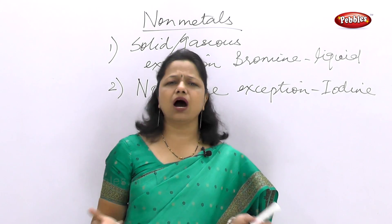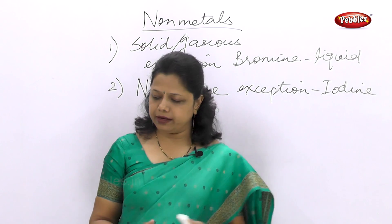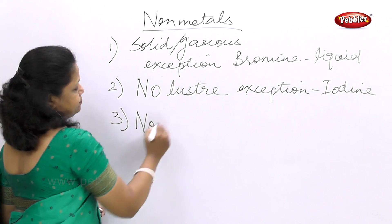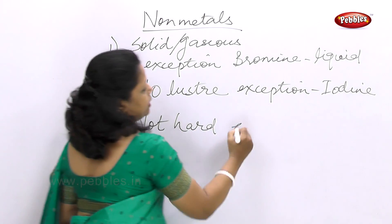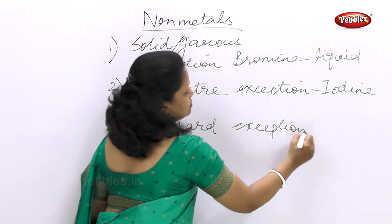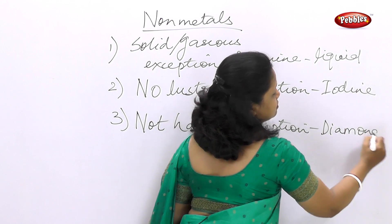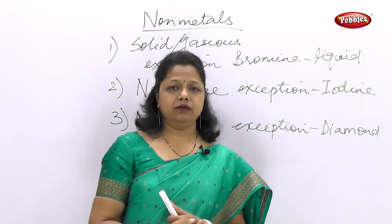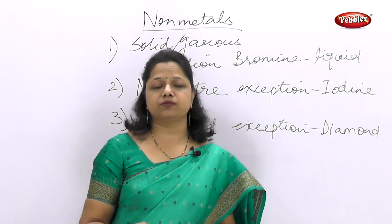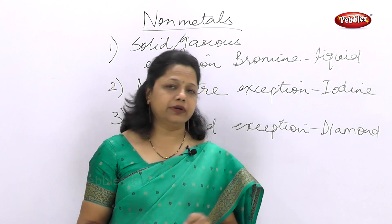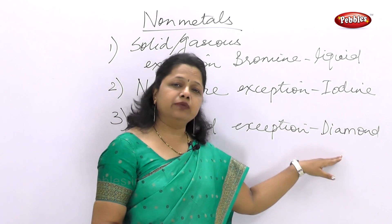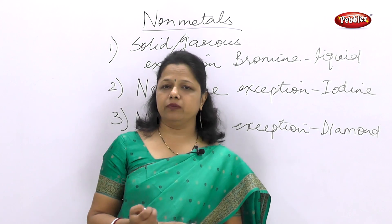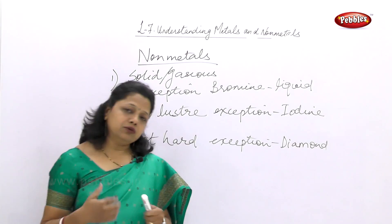The third property is that nonmetals are not hard. They are not hard, with the exception of diamond. Diamond is a carbon material and is said to be the hardest substance known, but it is a nonmetal — so diamond is the hardest nonmetal and is an exception.